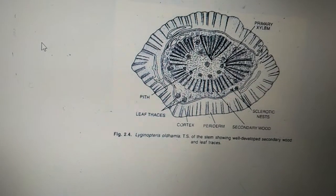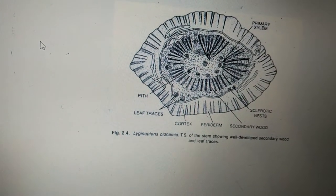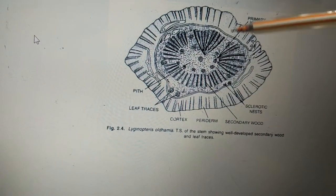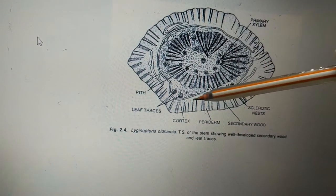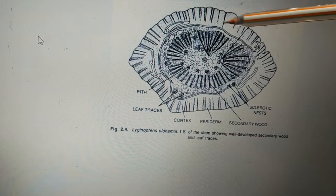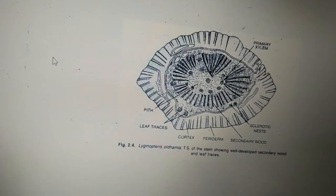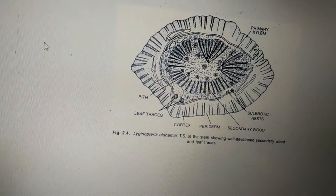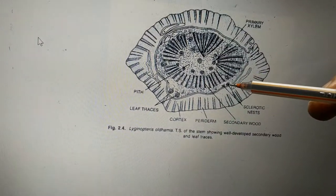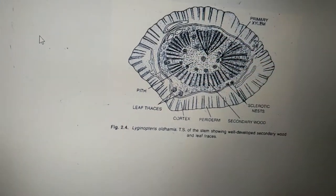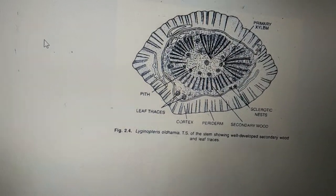This might be the outer cortex, and inner to this region it might be inner cortex. Inner cortex is made up of parenchyma cells. Now there is a ring labeled secondary wood, so this ring is nothing but secondary wood is present, which indicates secondary growth in Lyginopteris.